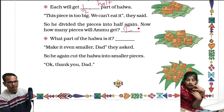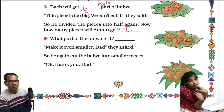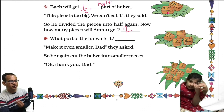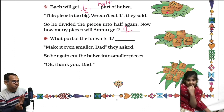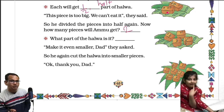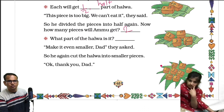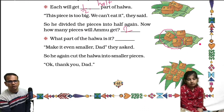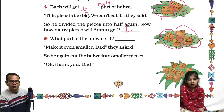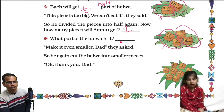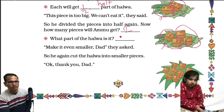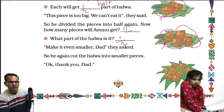He divided the pieces into half again. Now how many pieces will Ammu get? This big one is too big and cannot go in their mouth, so he cut the pieces so they can fit in the mouth — divided into two equal parts. Ammu's portion is here. So this part and this one — what part of the halwa is it? It's one by two only. Ammu got one by two of the halwa.